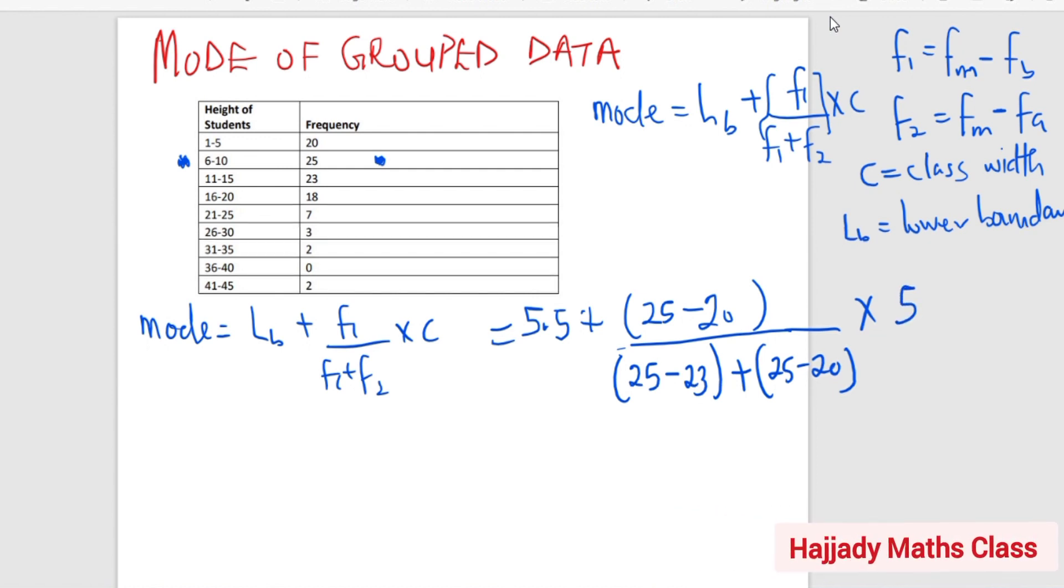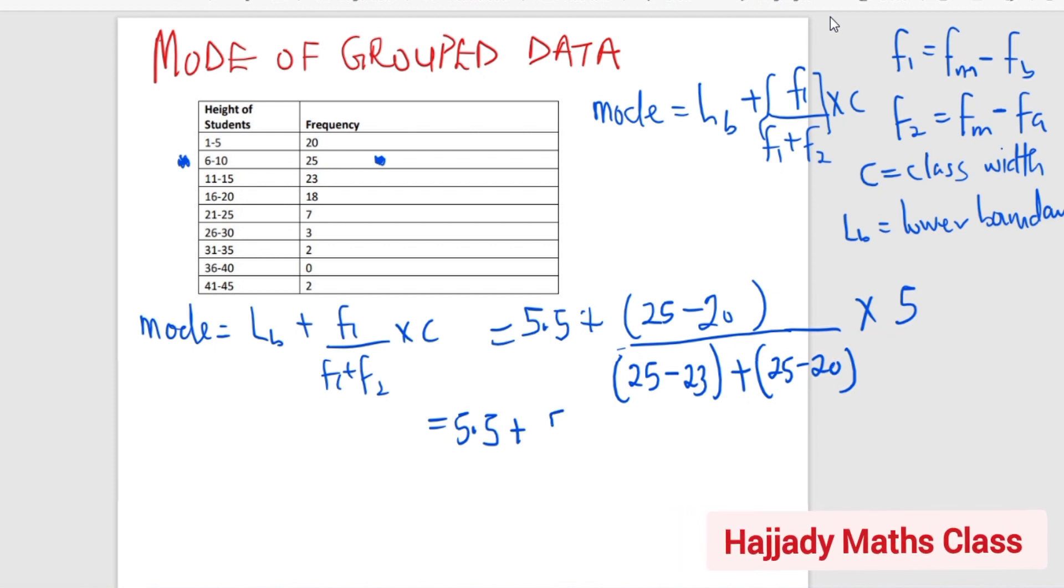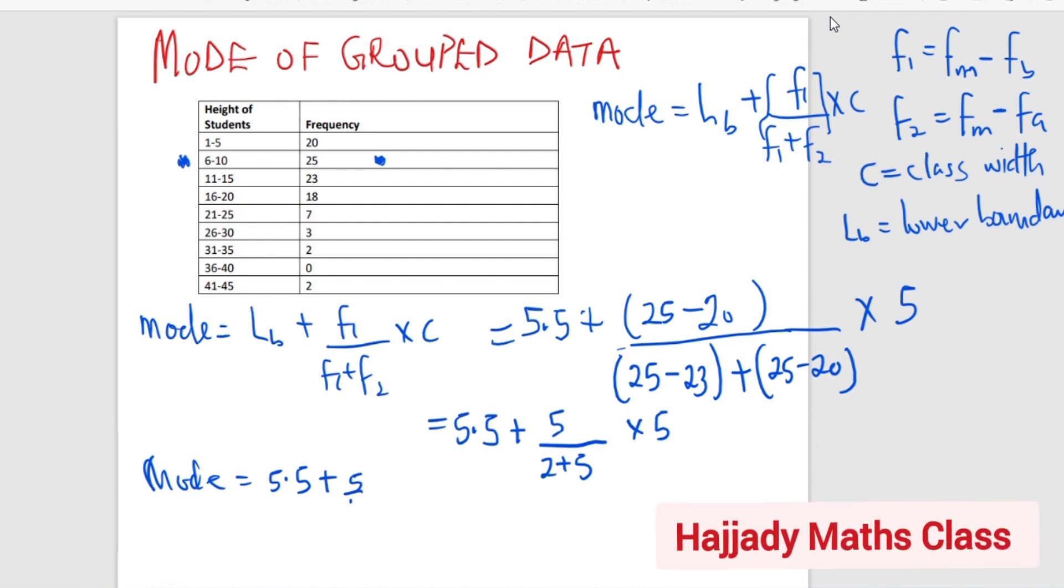Now, simplifying this further, I'm going to have 5.5 plus 25 minus 20 is going to give me 5 over 25 minus 23 is going to give me 2 plus 5 plus 5. And with this, I'm going to have 5.5 plus 5 over 7 multiplied by 5.